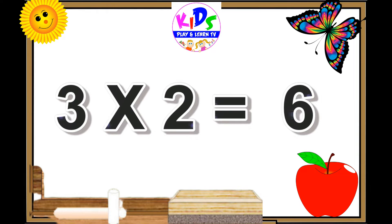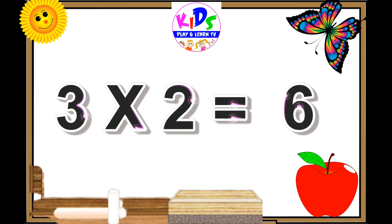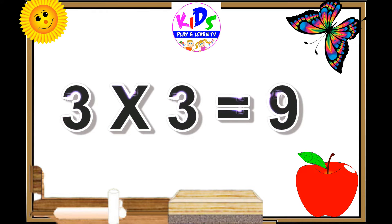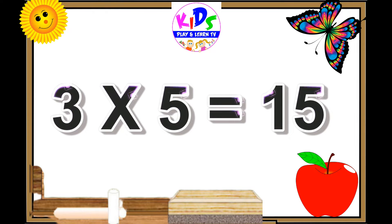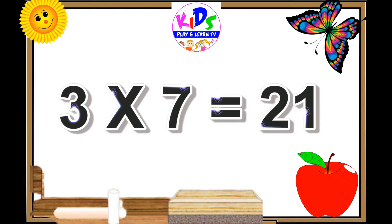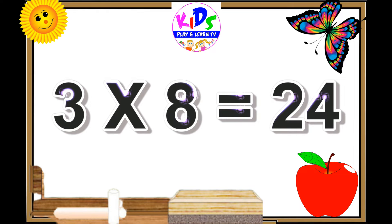Three ones are three. Three twos are six. Three threes are nine. Three fours are twelve. Three fives are fifteen. Three sixes are eighteen.